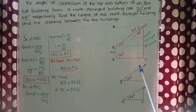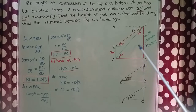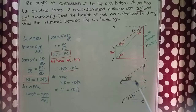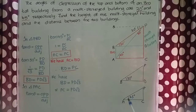To solve the problem, let us draw the right triangles from this figure. The first right triangle is triangle PBD with acute angle 30 degrees, where PD is the opposite side and BD is the adjacent side. The second right triangle is triangle PCA with acute angle 45 degrees, where PC is the opposite side and AC is the adjacent side.